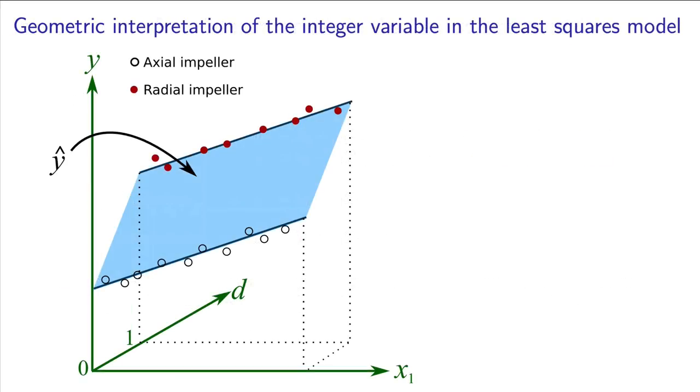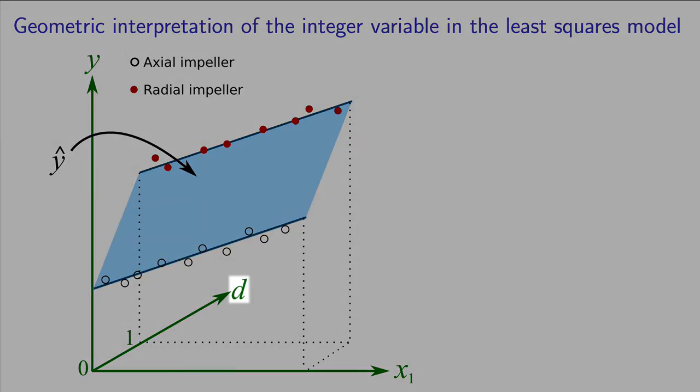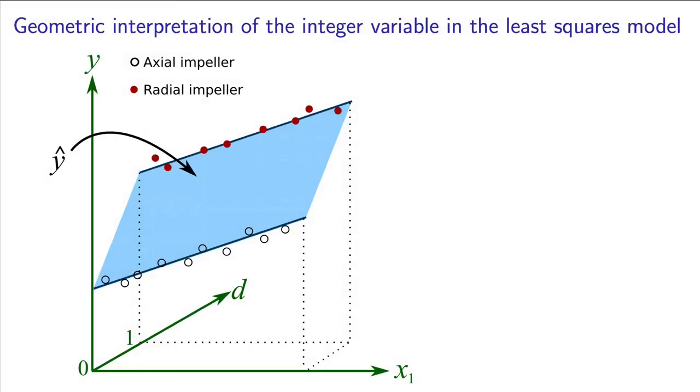Geometrically, we can visualize this as we've seen before. We have a three-dimensional plot, but this time, the axis is going into and out of the screen, the d-axis. It is either a value of zero here at the front with open circles, or a value of one at the back with closed circles for the radial impeller case. The least squares plane passes through this cloud of points, but what is different is that these points are clustered only at zero on the d-axis, or only at one. It is not possible to have points somewhere in between, or above one, or below zero. Even though algebraically, the prediction equation for y-hat allows you to go put in any value of d, the model is technically undefined at the values that are not equal to zero or one for d.